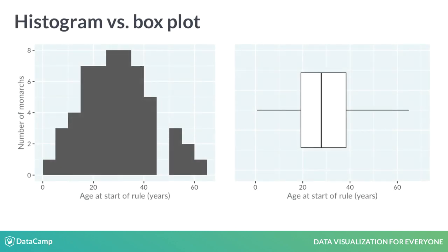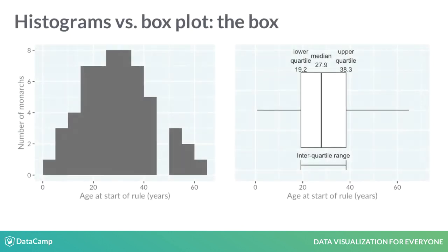Here's a comparison of the histogram you saw before with a box plot. The line in the middle shows the median of the distribution — that is, half the monarchs started ruling before this age, and half after this age. The box in the box plot extends from the lower quartile to the upper quartile. The lower quartile is the point where one-quarter of the values are below it; that is, one-quarter of the monarchs started ruling before this age, and three-quarters after it.